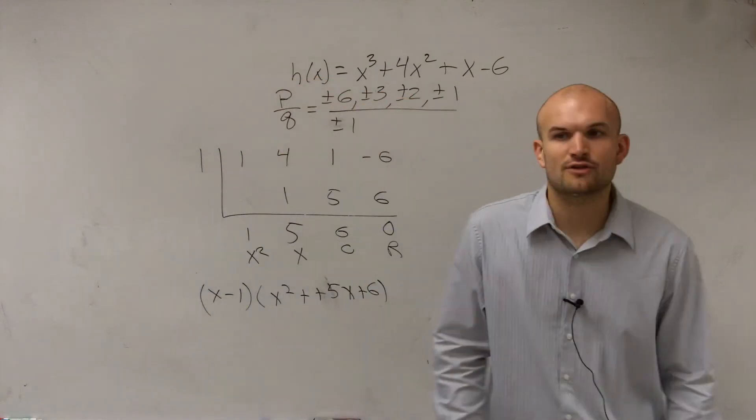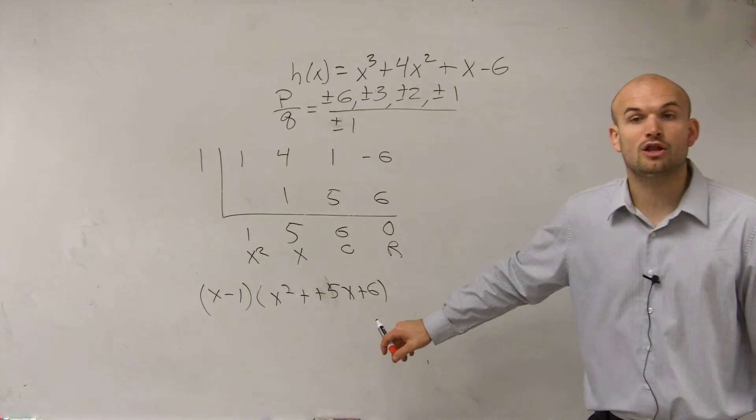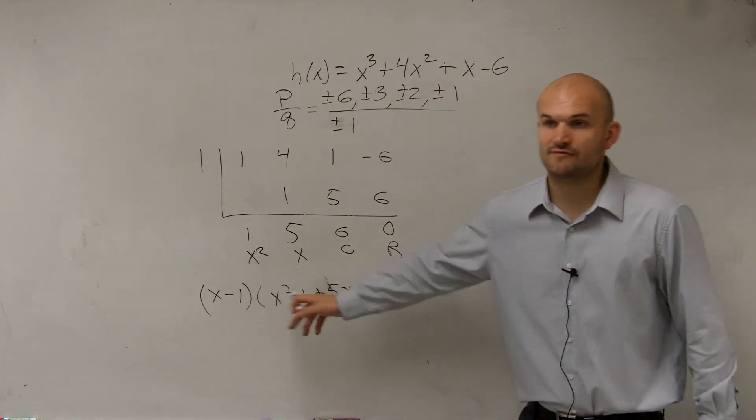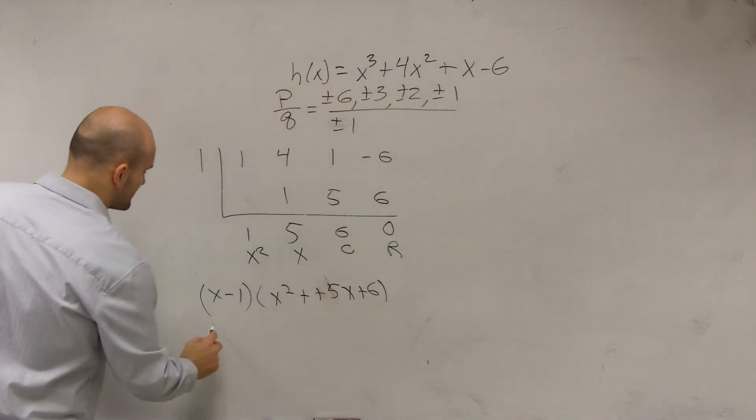Well, they're not saying find all the factors. They're saying find the zeros. So first of all, remember, all of our factors have to be linear. So is this a linear factor? No, it isn't. So we need to factor this down.